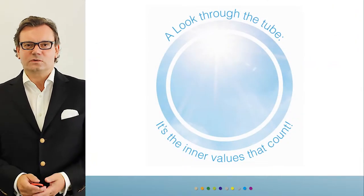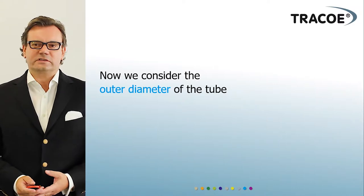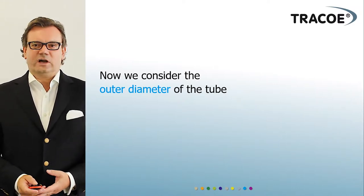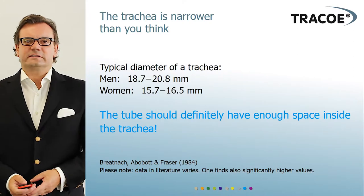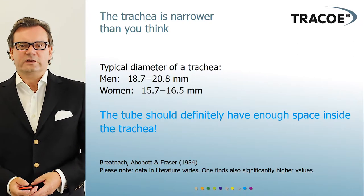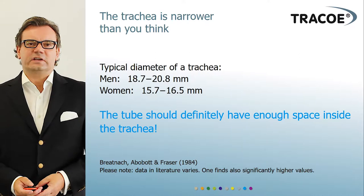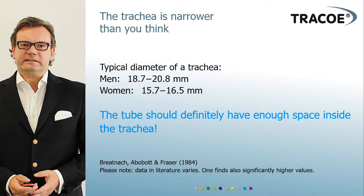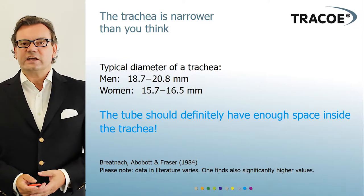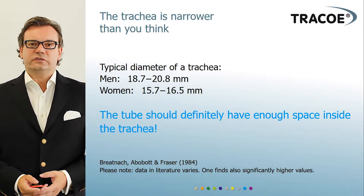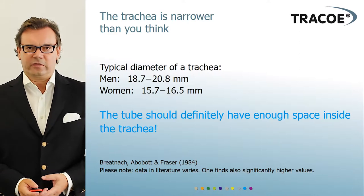As Brian just discussed the importance of the inner diameter, we are now going to focus on the outer diameter of the tube. The trachea itself is quite narrow to work in. The diameter for a male trachea is between 18.7 and 20.8 mm, while the female trachea averages 15.7 to 16.5 mm. This shows precisely how narrow the space is, and why the outer diameter is so important.